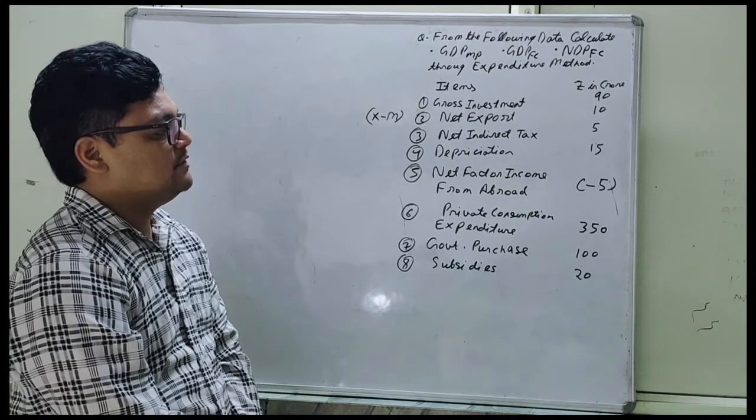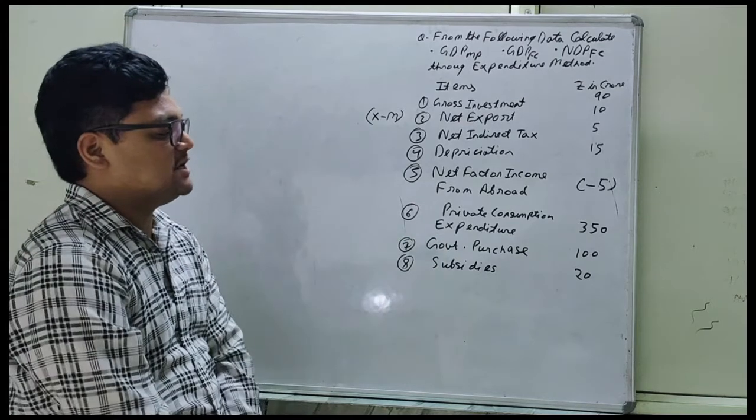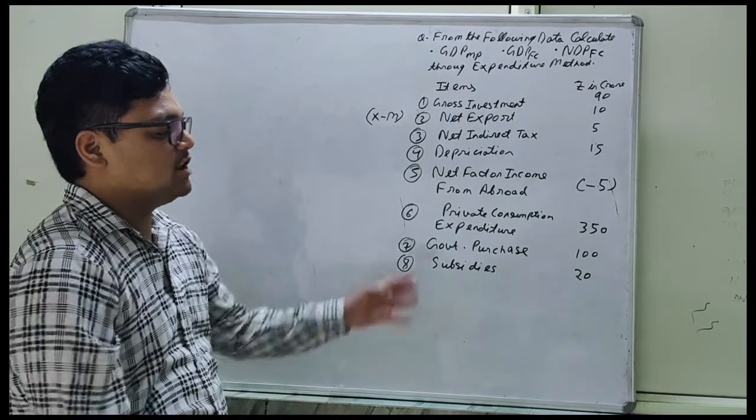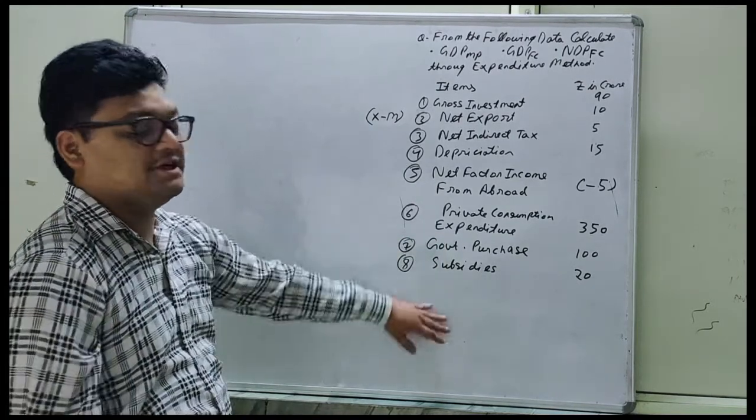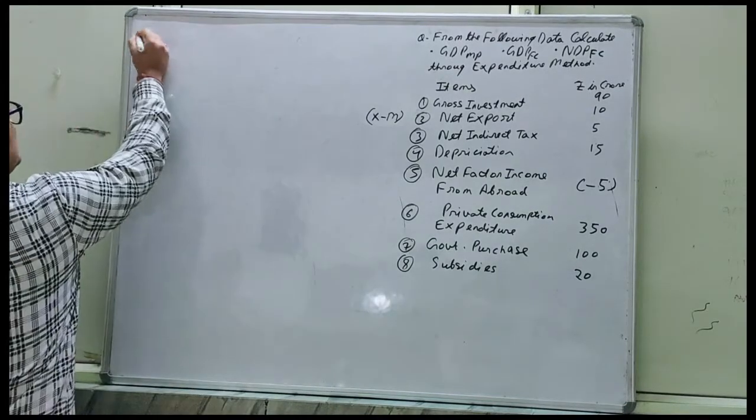Net factor income from abroad minus 5, private consumption expenditure 350, government purchase 100, subsidy 20. So let's start with first GDP MP.